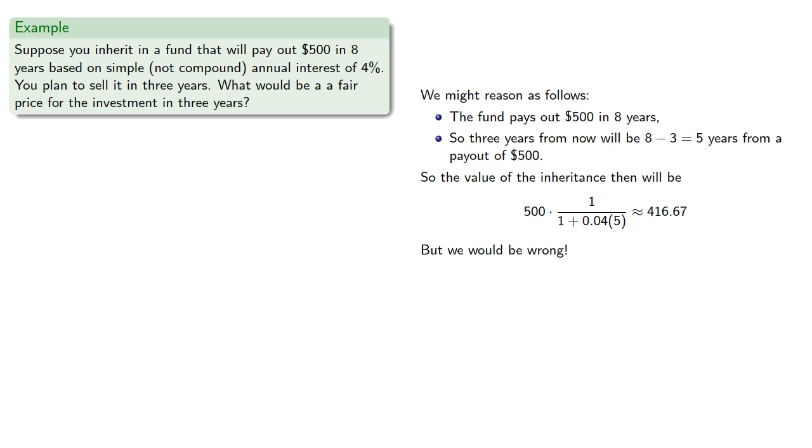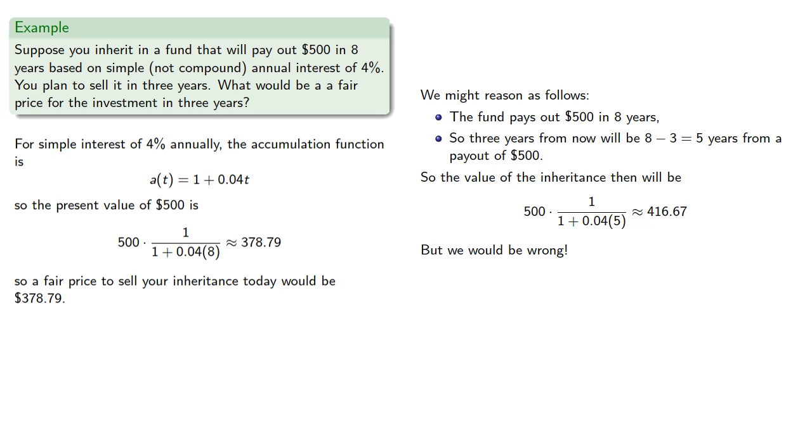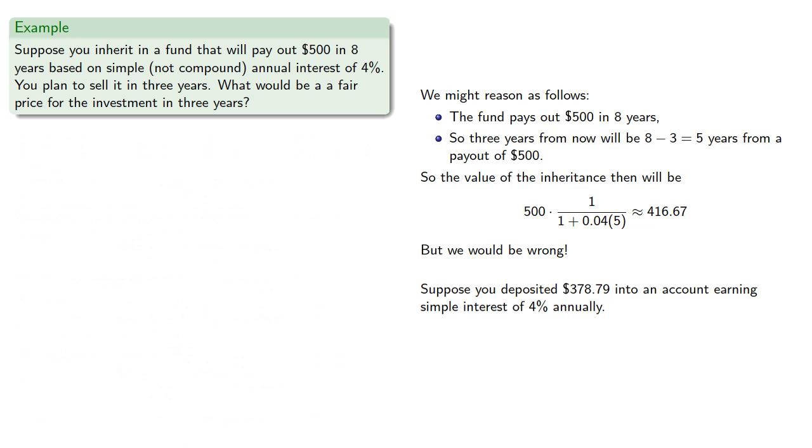Remember, we calculated the present value of the fund was $378.79. So suppose you deposited that $378.79 into an account earning simple interest of 4% annually. After three years, the account would have a balance of... So if someone offered $416.67 for the account, you wouldn't want to sell it for that amount.